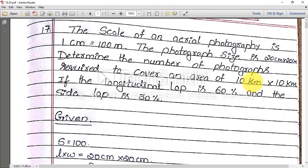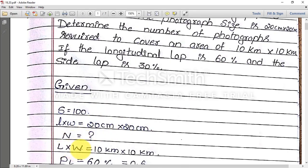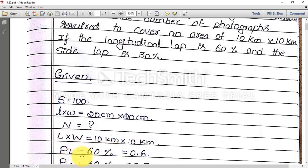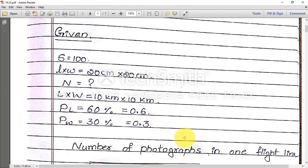So S is given as 100, small l × small w is 20 cm × 20 cm, N is equal to question mark, L × W is 10 km × 10 km, PL is 60% that is 0.6, PW is 30% that is 0.3. Now what is the first step? Number of photographs in one flight line.